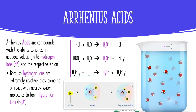Over here in this beaker I've got a unit of HCl or hydrochloric acid, and I'm going to dissolve that in water. Once it dissolves, you'll see it forms the hydrogen ion and the chloride anion. Since these hydrogen ions are so reactive, they react with the nearby water molecule and form a bond there, forming a hydronium ion.